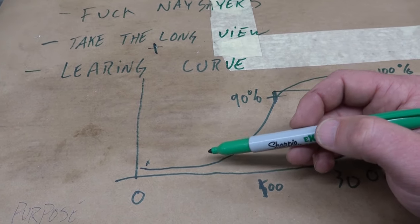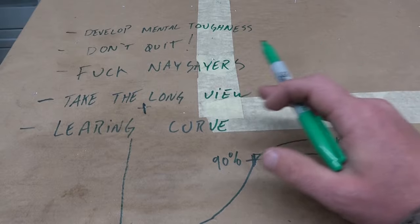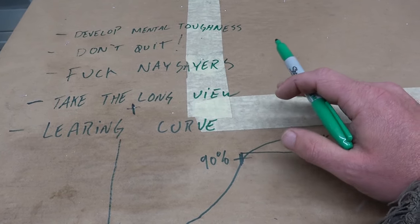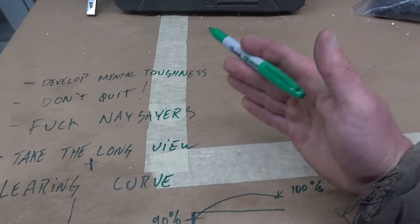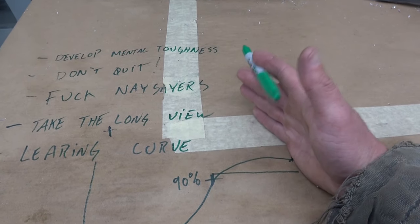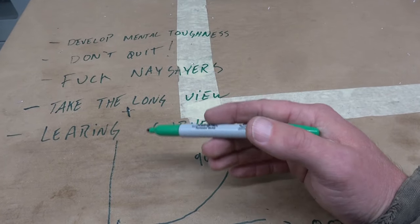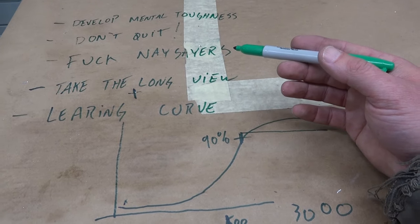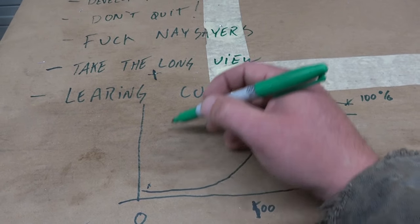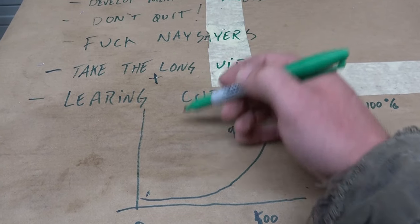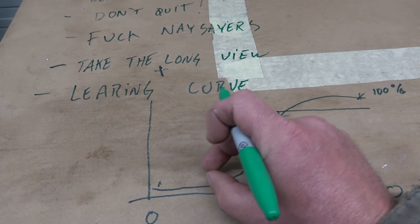When you put the last two points together - take the long view and the learning curve - what you end up getting is that tiny improvements over time make huge differences. You're not going to get to be an astronaut in one hop. That's going to take a daily routine of learning and working towards that goal. You're not going to do it in one day. Rome wasn't built in a day and neither was your life.